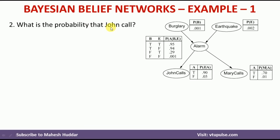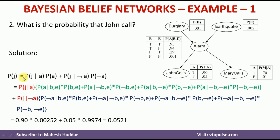What is given in the problem is that John is calling, and we do not know anything about the remaining events. The probability of John calling depends on alarm — he will call whenever there is an alarm, or sometimes when a telephone rings. So there are two cases: John calls given alarm, and John calls given no alarm. We can write: P(J) = P(J|A) × P(A) + P(J|¬A) × P(¬A). P(J|A) = 0.90 and P(J|¬A) = 0.05.